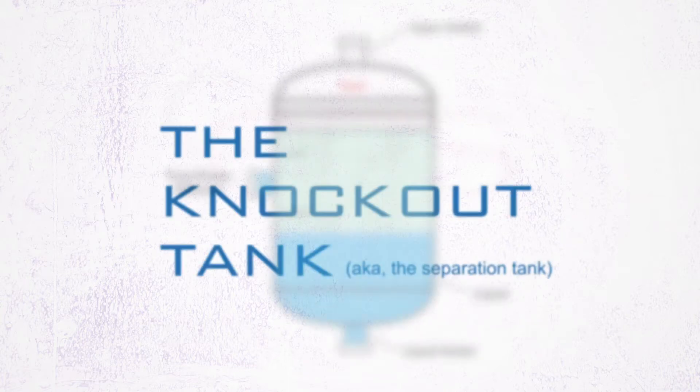As the name implies, a knockout tank is designed to knock out or separate liquid from vapor during a two-phase relief discharge.